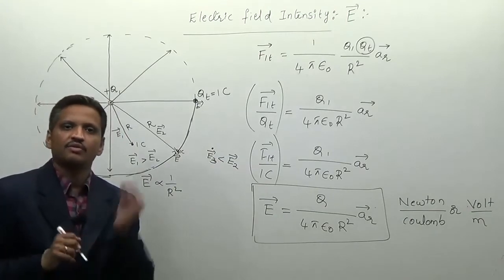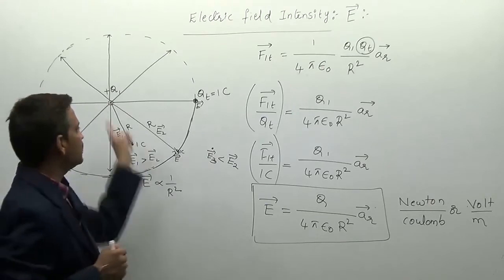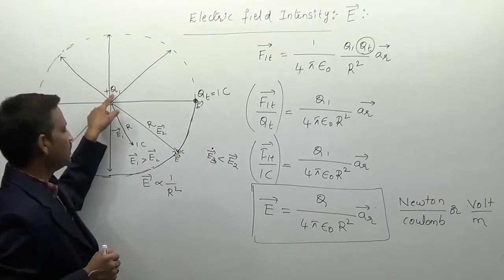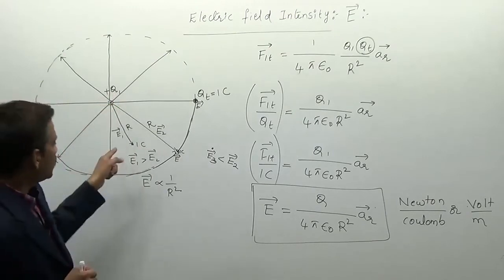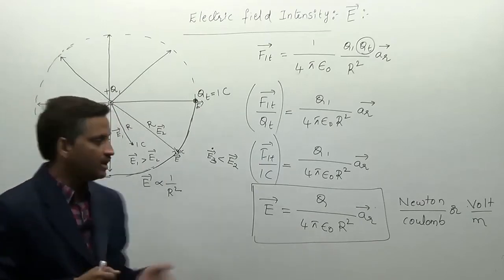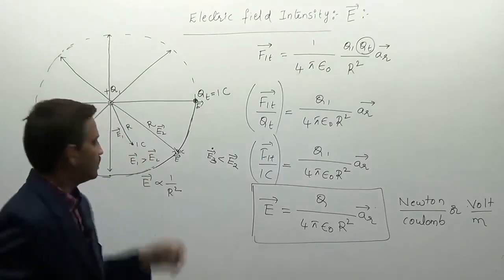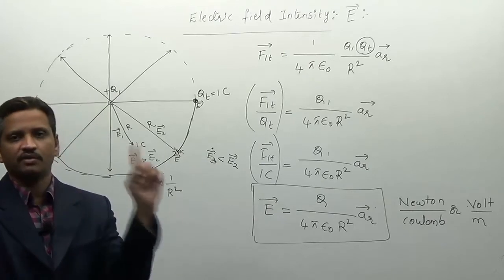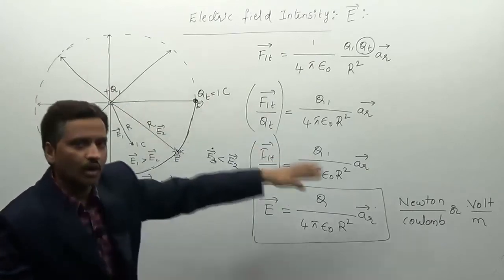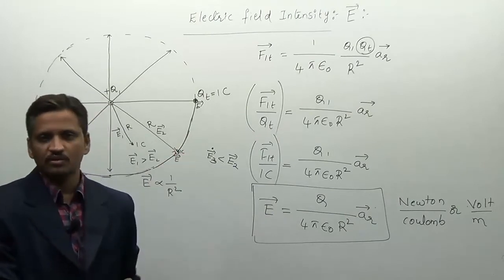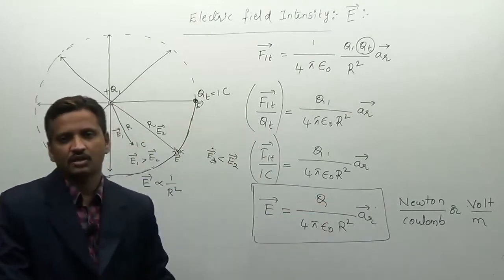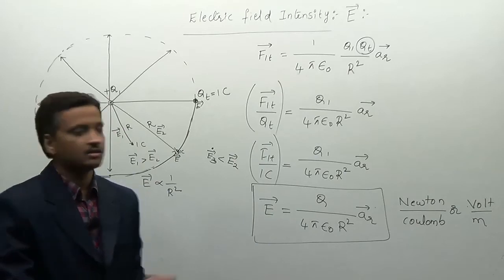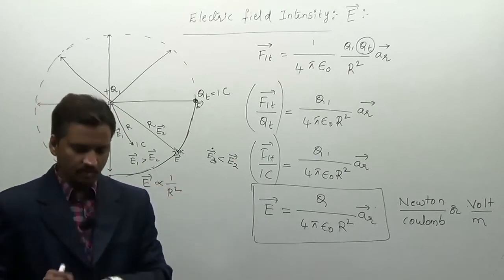To measure the electric field intensity at any point in an electric field, you simply place one coulomb of charge at that point and find out the force exerted by the source charge on that one coulomb of charge. That force gives us the electric field intensity at that point — whether you are measuring inside or outside.